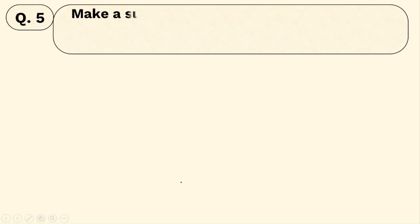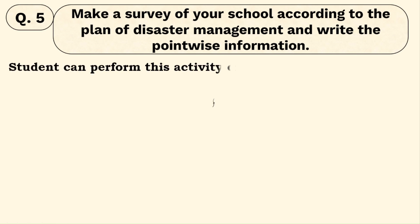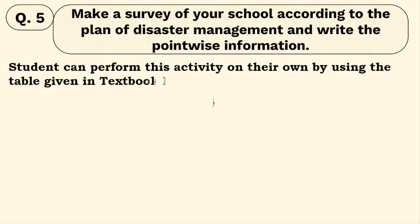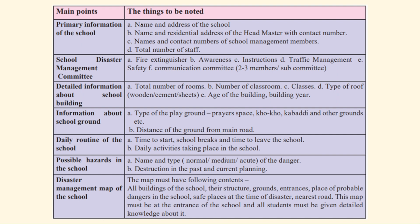Question number five: make a survey of your school according to the plan of disaster management and write point-wise information. This is an activity that students can perform themselves — I cannot give a proper answer here. The textbook on page number 65 has a chart with main points and things to be noted. The school's information needs to be filled in, including the school disaster management committee and detailed information about the school building.